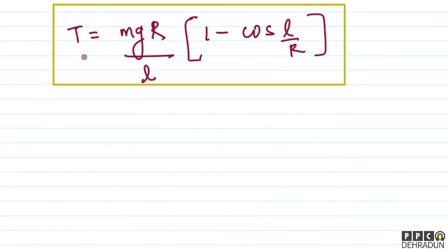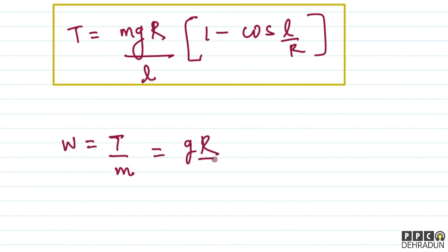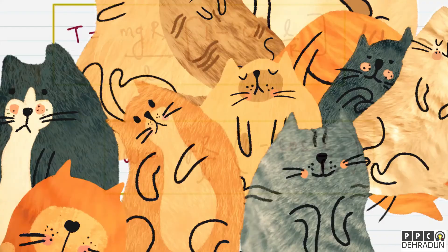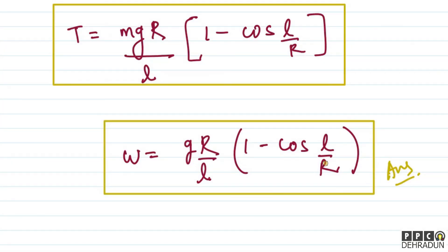So the acceleration W = T/m = (gR/L)(1 − cos(L/R)). This is our final answer. I hope you understood this problem well. In case any doubt remains, feel free to contact me — I will be very happy to help you. Take care, bye bye.